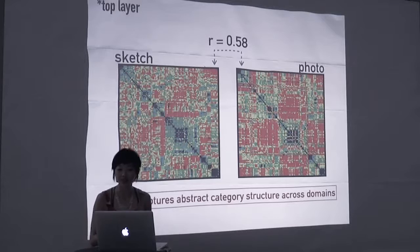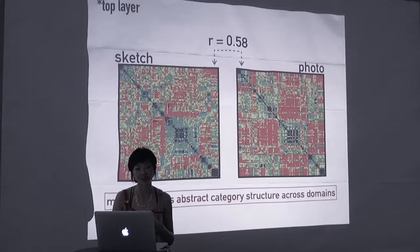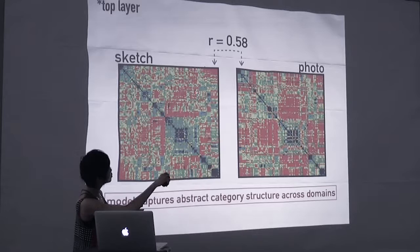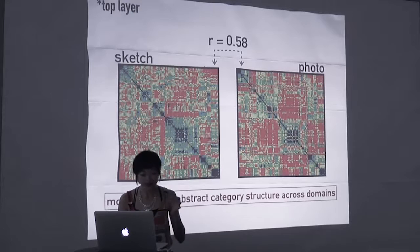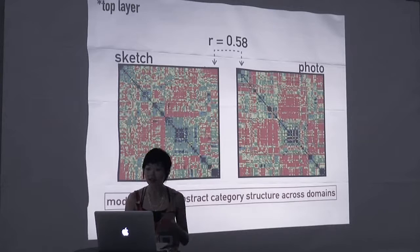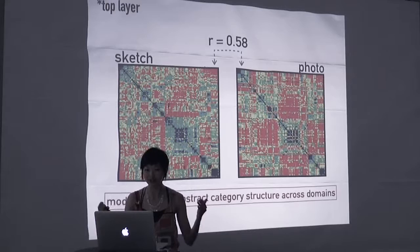But more to the point, the same kind of higher order cluster structure appears to be shared across image domains using this high-level feature representation. Here, quantified by the similarity of these two matrices, this is a Spearman-Rank correlation between them. And what this shows is that the overall representation of object categories is actually quite similar for photos and sketches. And it is precisely this commonality that may underlie the fact that we can recognize a line drawing of an elephant and a photo of an elephant with no problem at all, despite large physical differences between photos and line drawings.